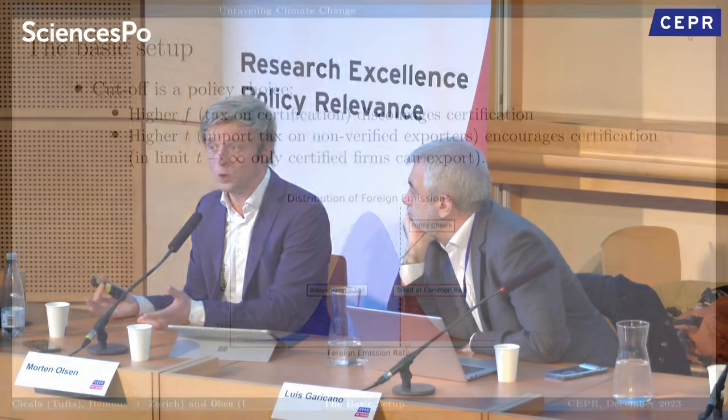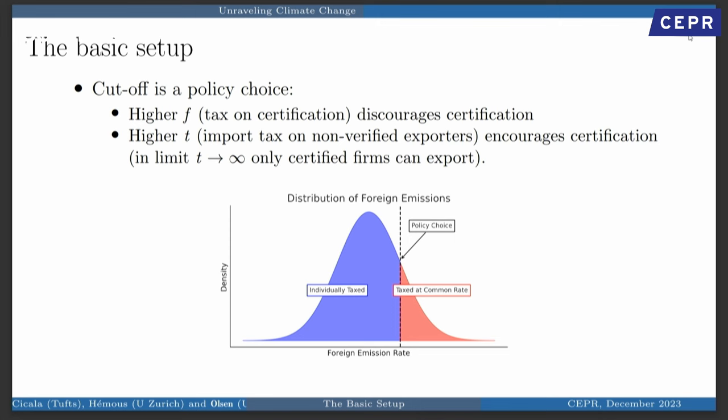The blue producers pay the cost and get certified; the rest don't. The cutoff is a policy choice — you can either tax or subsidize certification via little f, or make the certification process more or less cumbersome. Whether firms certify also depends on how you treat those who haven't. Importantly, you learn something from the fact that a firm has not certified — those firms have higher emission levels and should be taxed accordingly higher.